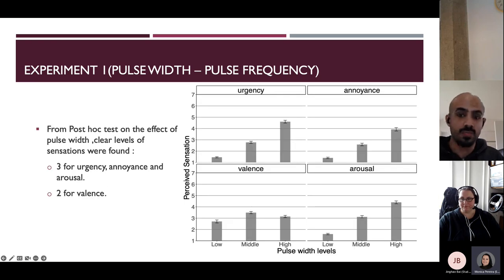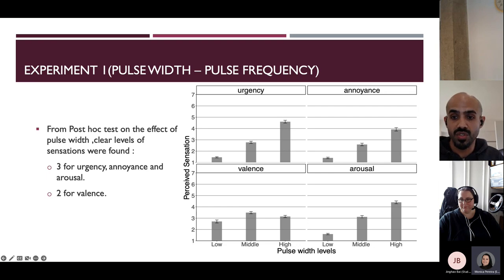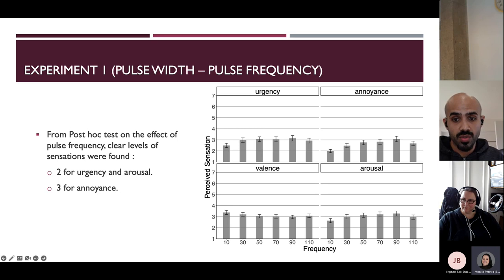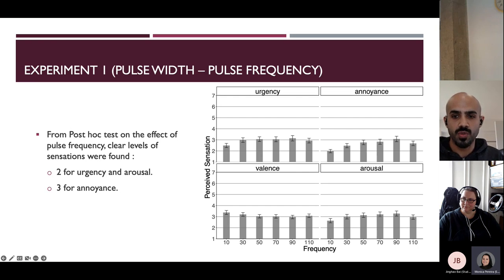After the statistical test, I performed a post-hoc Tukey test to identify how many clear levels of sensations existed. I found three clear levels of urgency, three of annoyance, three of arousal, and only two of valence. For the effect of pulse frequencies, I found only two clear levels of urgency and arousal, and three for annoyance. I also realized that frequencies of 30 pulses per second and beyond were perceived the same — no significant difference between them.